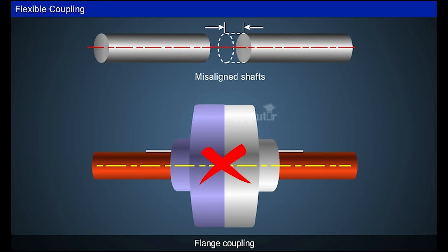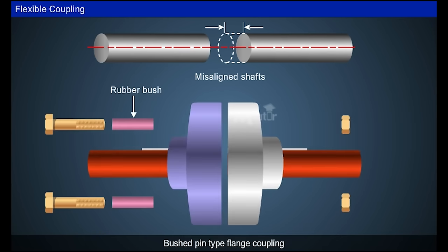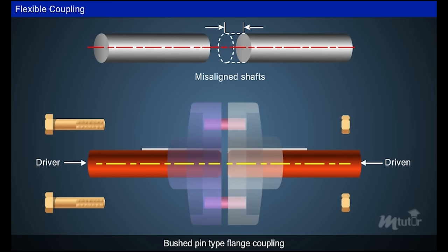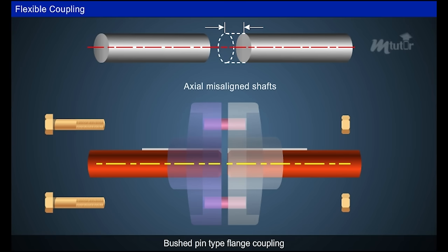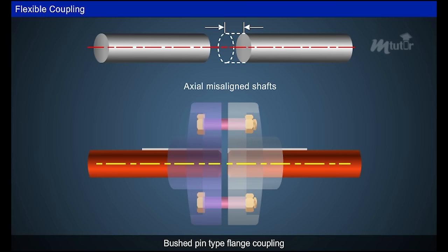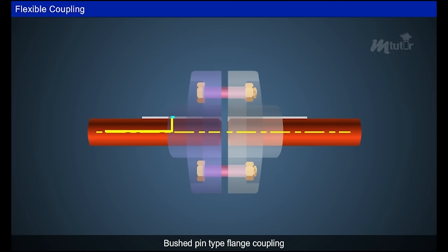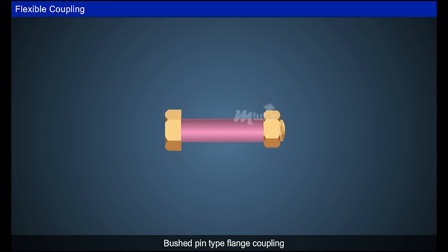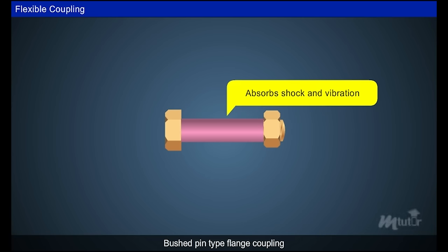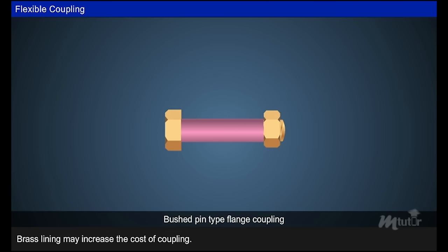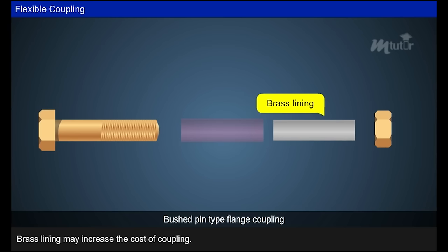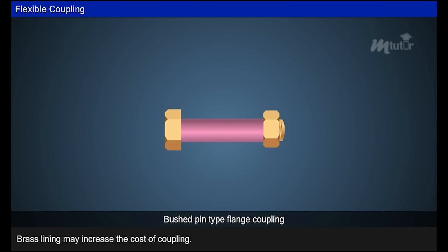In such cases, flexible coupling — that is, bush pin type flange coupling — is employed. In this coupling, a flexible element like a rubber bush is placed between the driving and driven flanges. It is mostly suitable for axially misaligned shafts. The two flanges are connected by a number of pins in place of bolts, through which power is transmitted via the key. The rubber bush not only accommodates misalignment but also absorbs shocks and vibrations during power transmission. However, the rubber bush may wear during use, and brass lining can be added between the inner surfaces to address this, though it increases the cost.